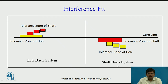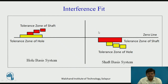In the shaft basis system, the tolerance zone of the shaft is fixed and coincides with the zero line, while the size of the hole or its tolerance zone is varied across three different sizes. In both systems, the size of the shaft is always greater than the hole size. This is the representation of interference fit on the hole basis system and shaft basis system.